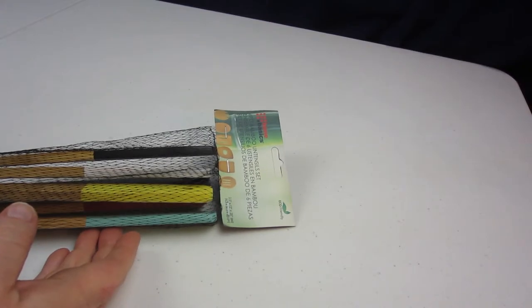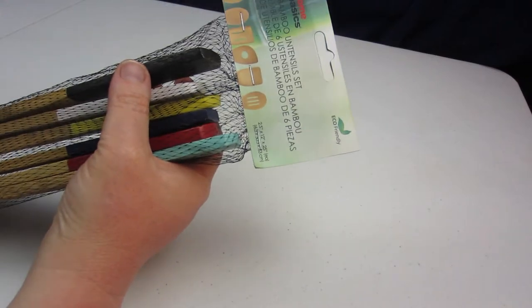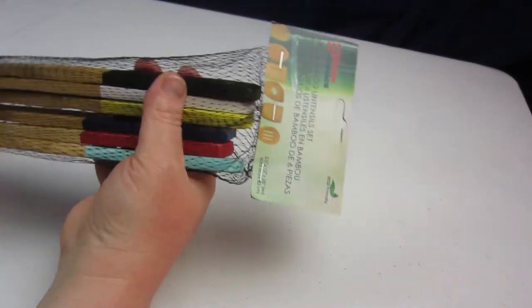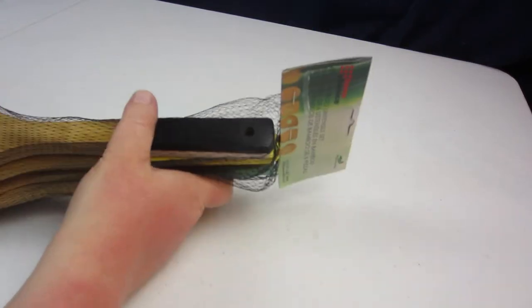Here we have Home Basics six-piece bamboo utensils set. Found these on Amazon as an add-on item, which was pretty nice. Six bamboo utensils for six dollars. I think it was $5.99. That's really nice.